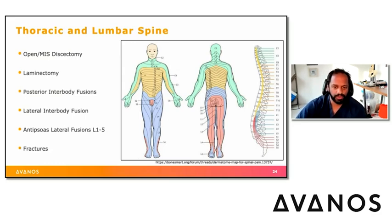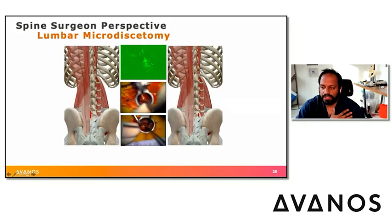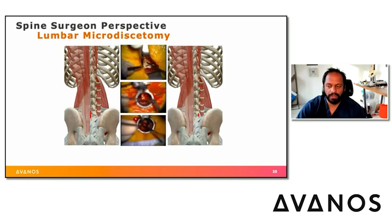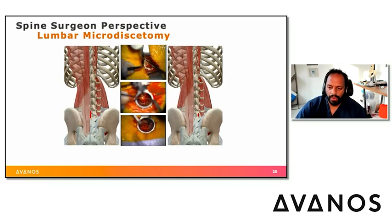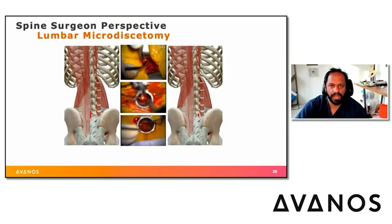For lumbar discectomies — whether through a midline open approach or a tube-based minimally invasive approach with a two centimeter incision — the key is knowing what side and level are being operated on and coordinating with your surgical team. For a microdiscectomy, place the catheter only on the side of the surgery; it is of poor utility to place a catheter on the contralateral side.